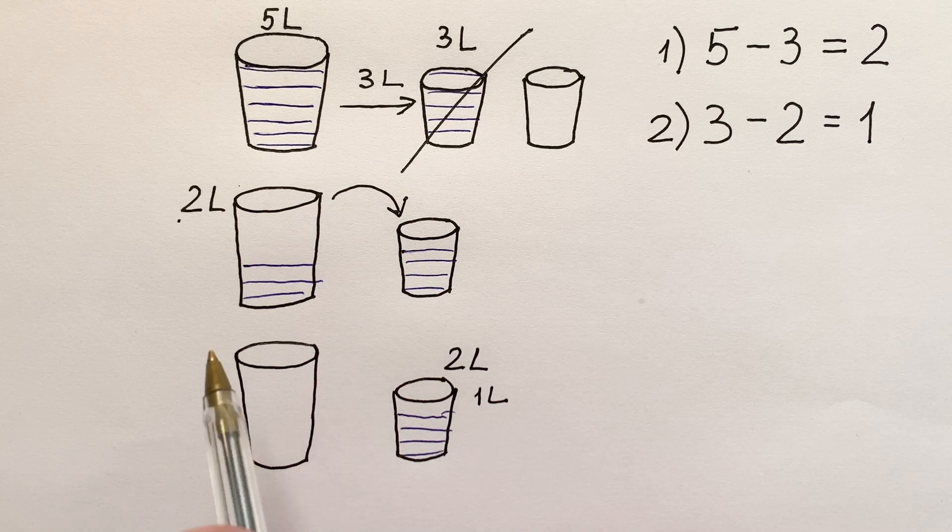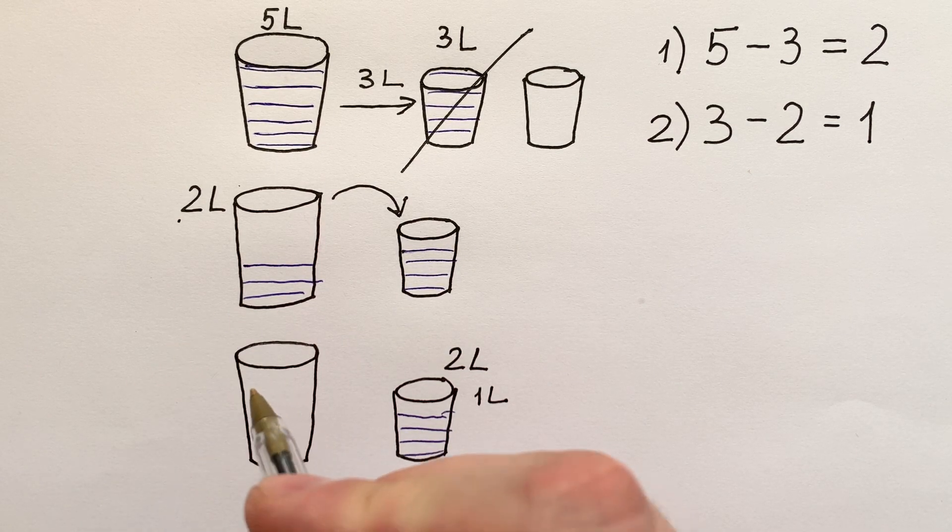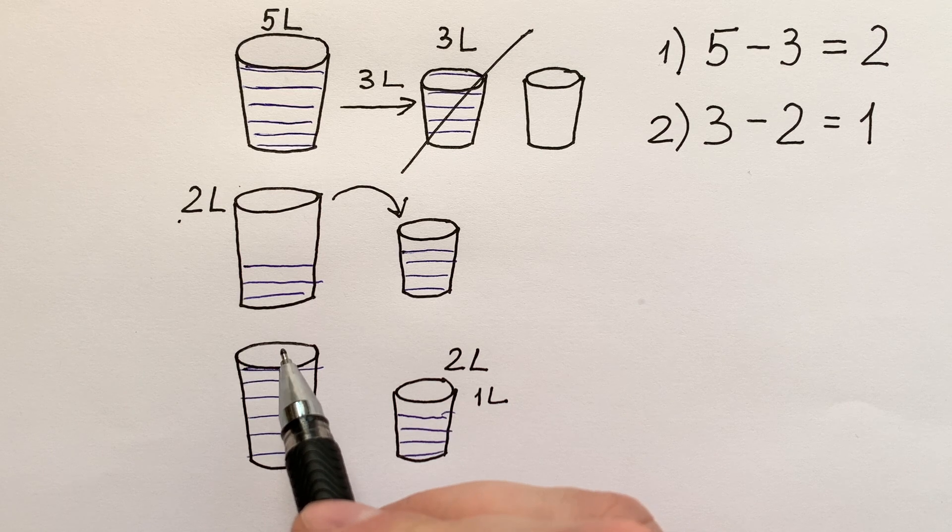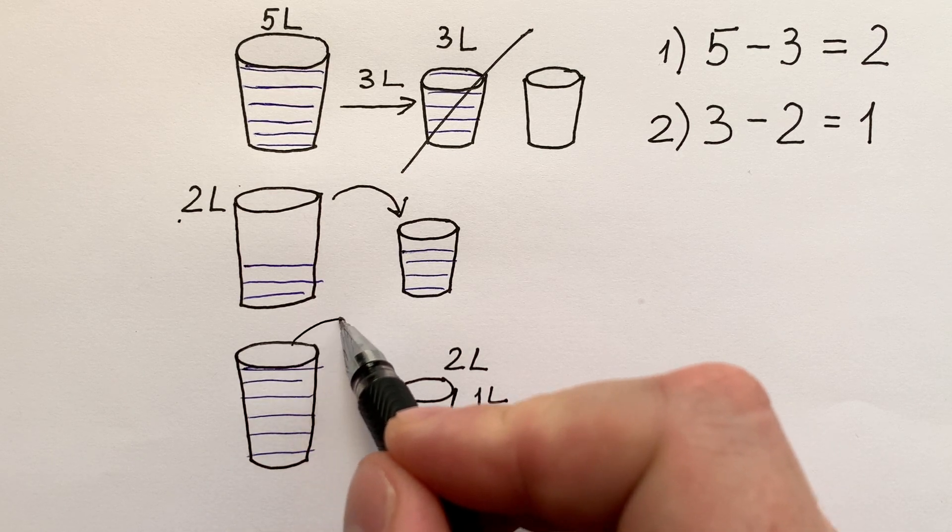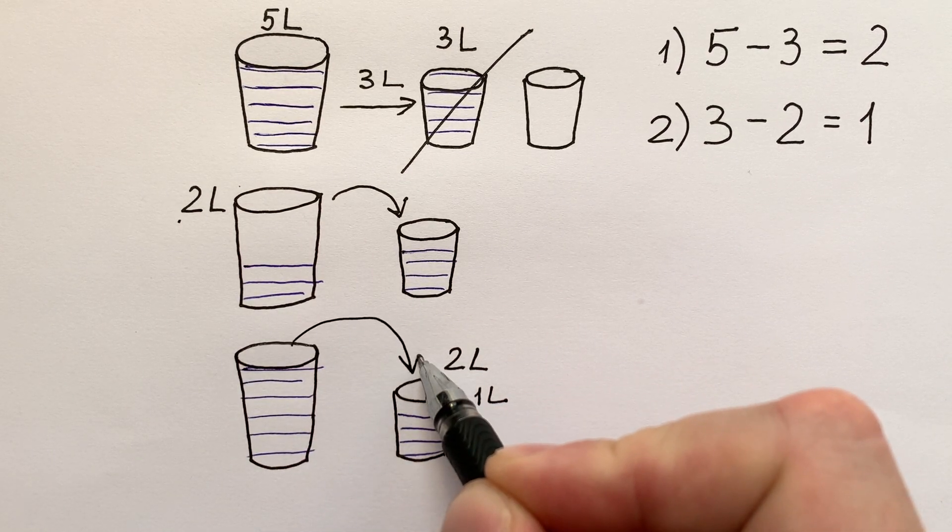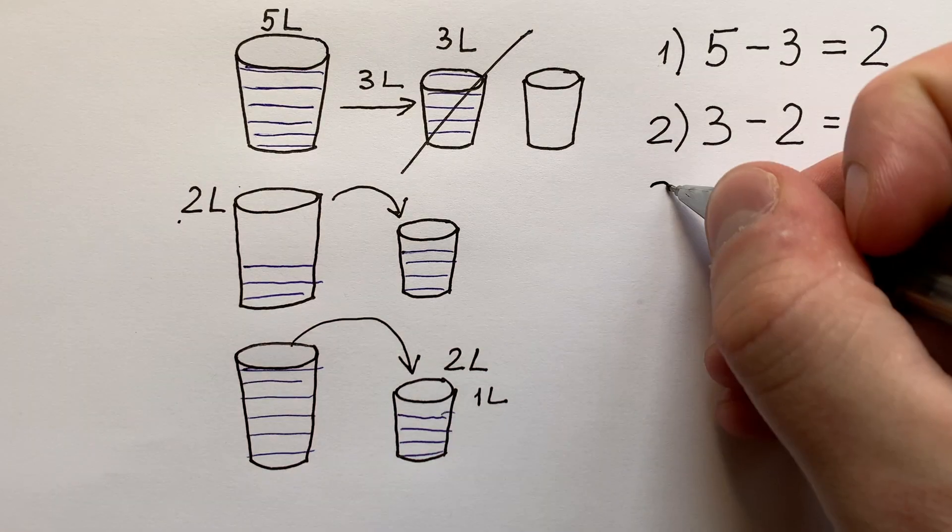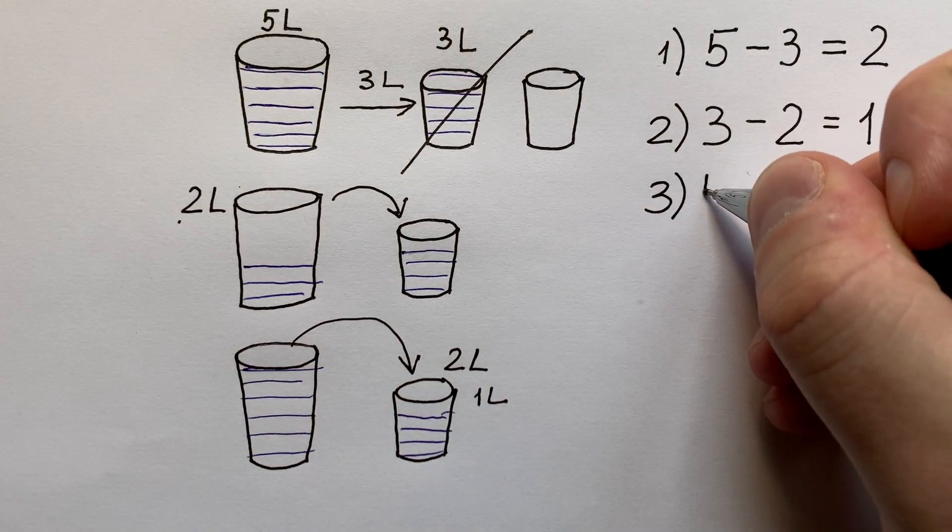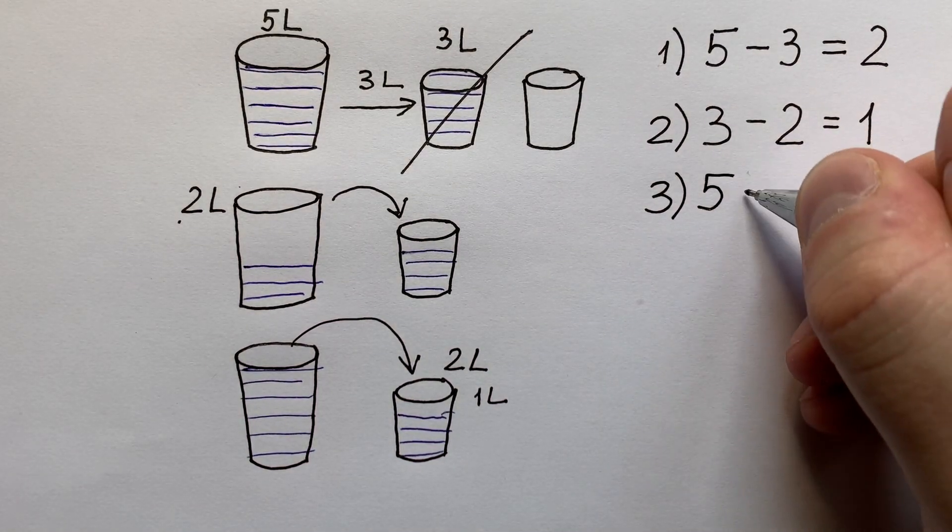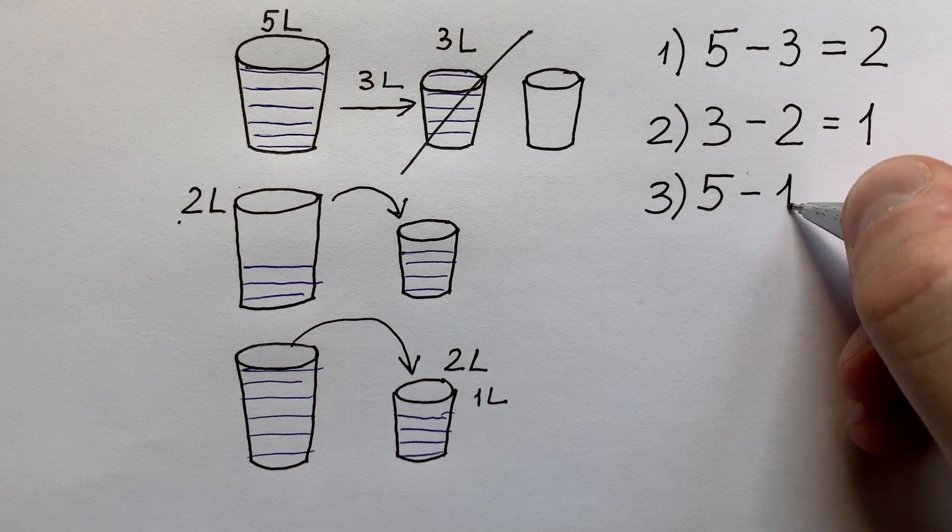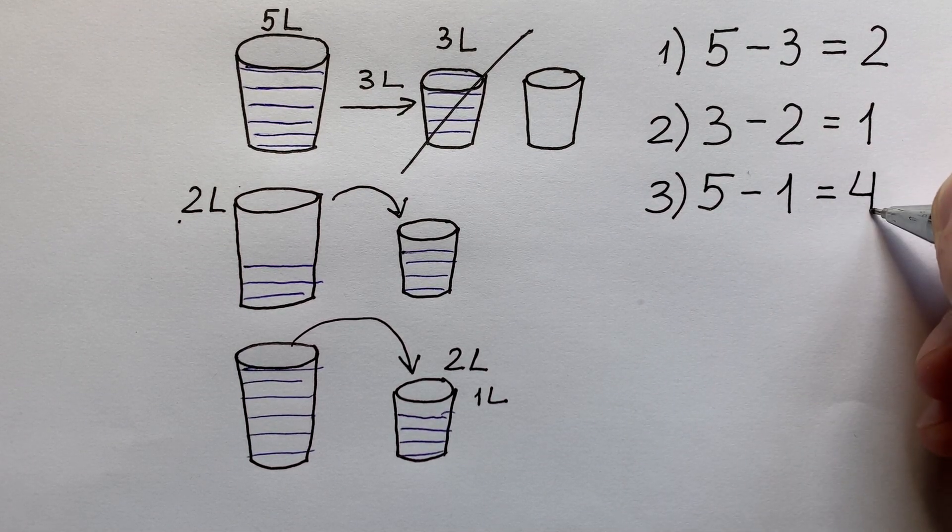What do we do next? Now we again fill the big bucket with water, and from five liters we pour one missing liter into the small one. So finally, in the big bucket we have five liters minus one liter, which equals four liters.